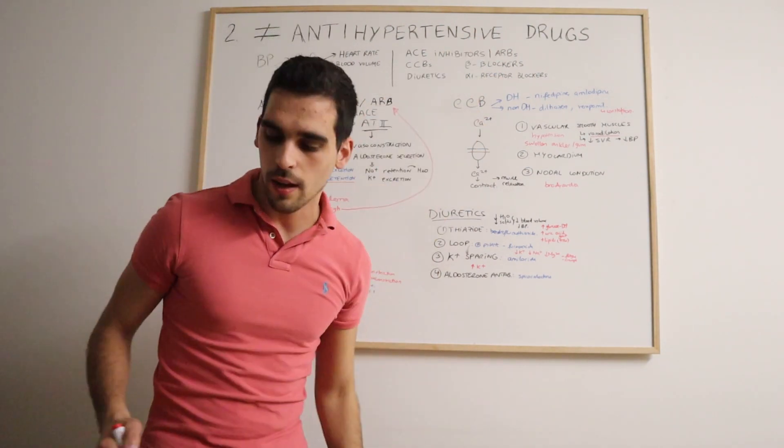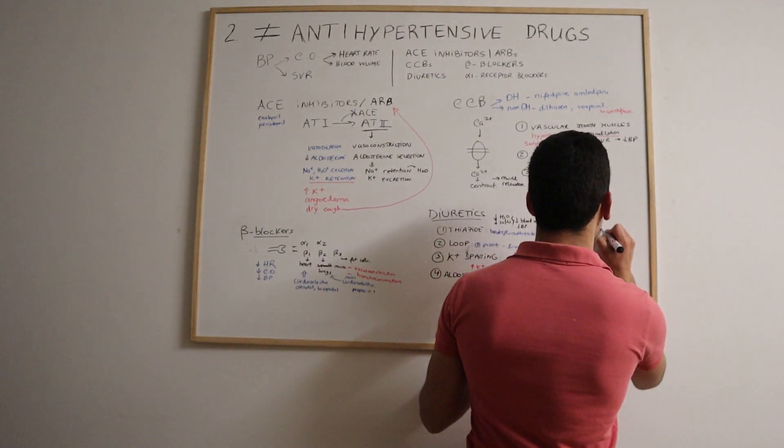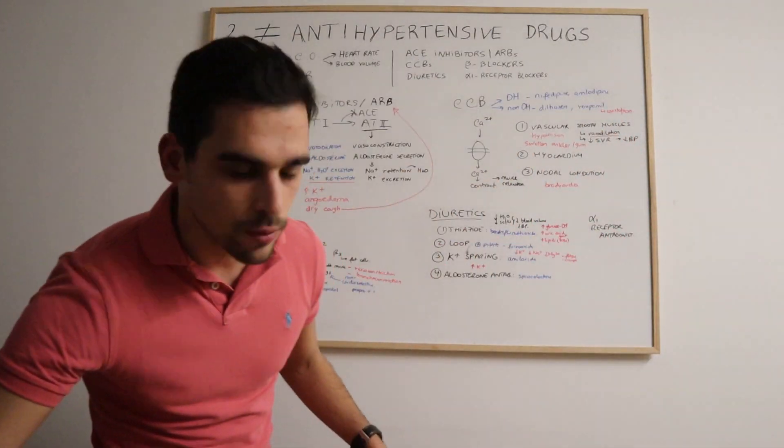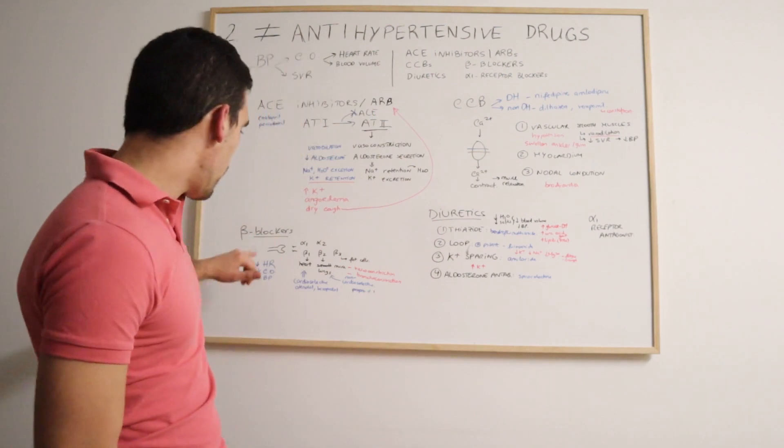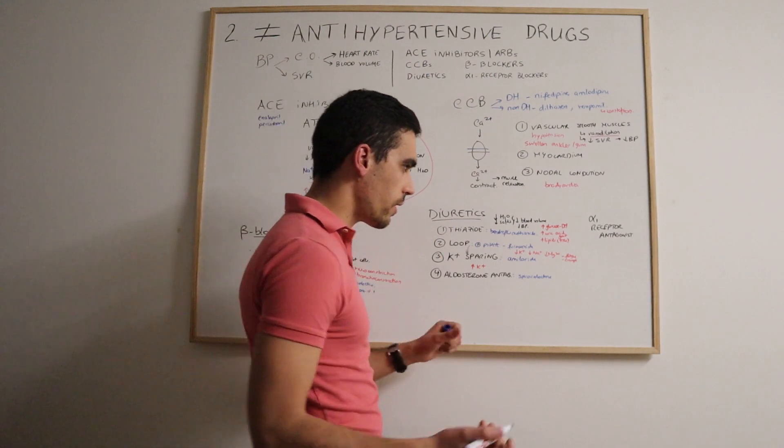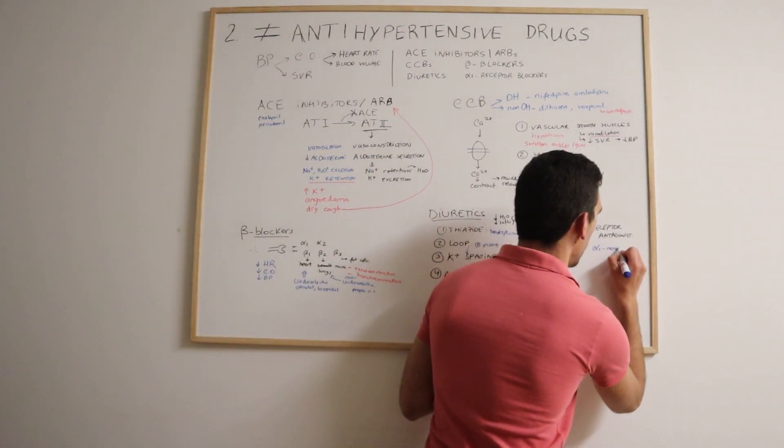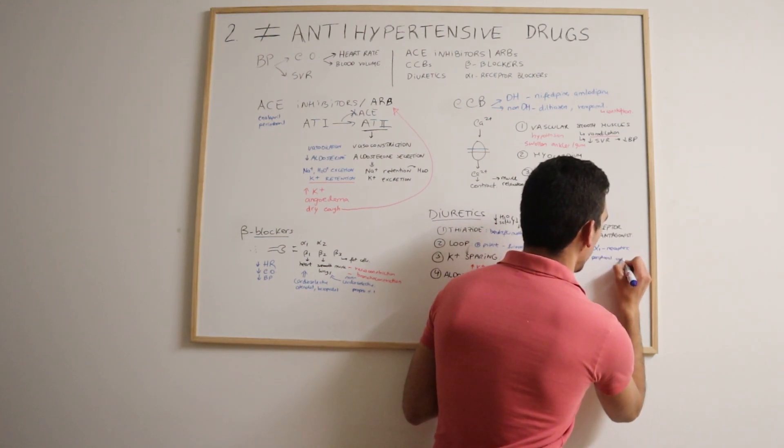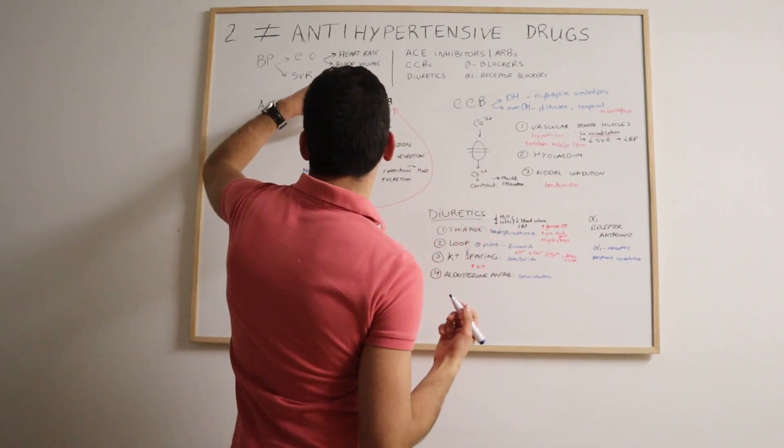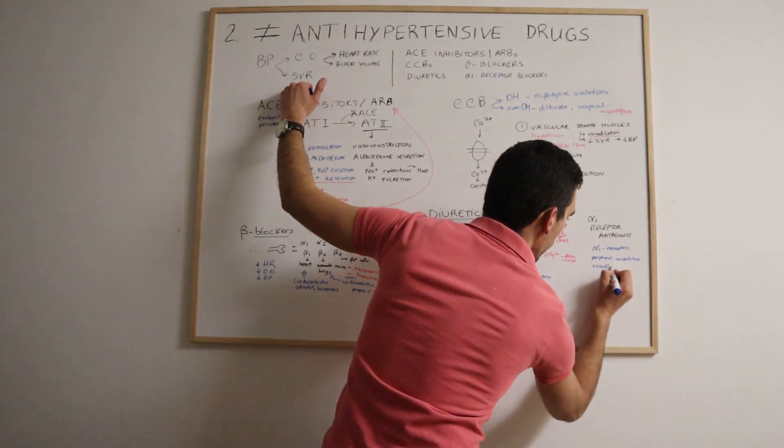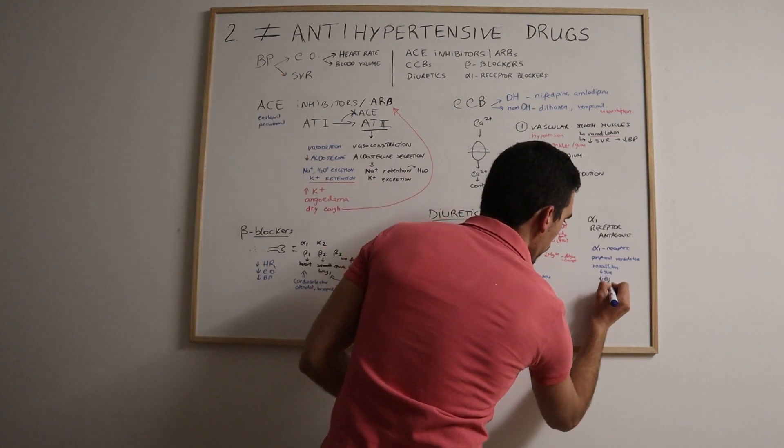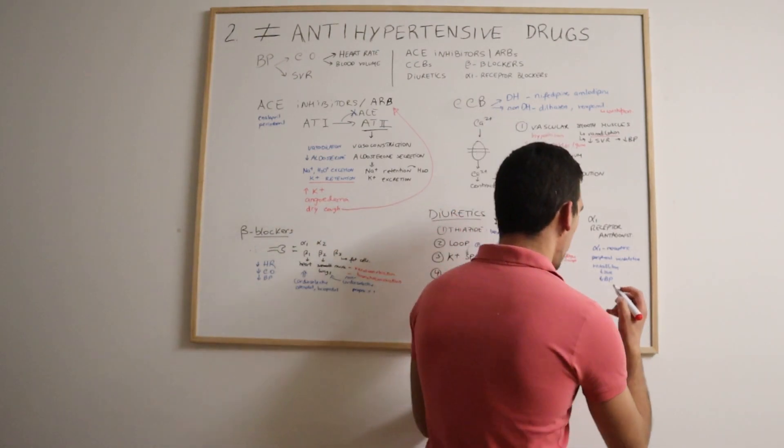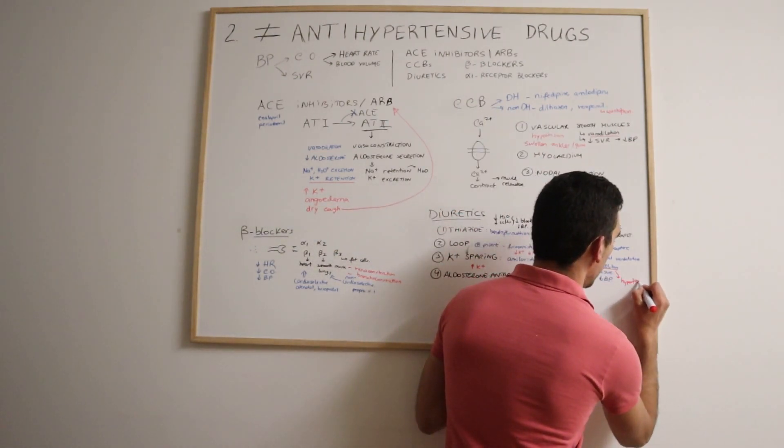Our last class is the alpha-1 receptor antagonists. These are pretty quick to explain. Basically, as the name indicates, they block the action in the alpha-1 receptors. They antagonize the effect in the alpha-1 receptors, especially in the peripheral vasculature. As consequence, we'll have vasodilation with decreased systemic vascular resistance, so the blood pressure also decreases. The main side effect to bear in mind with alpha-1 receptor antagonists is hypotension because there is vasodilation. Extreme hypotension may happen.